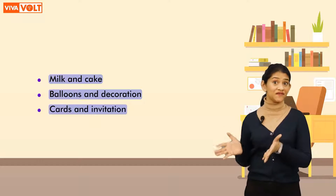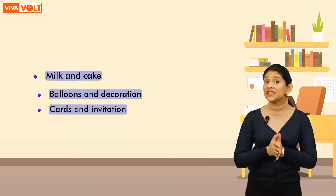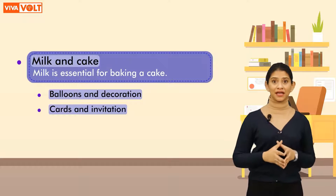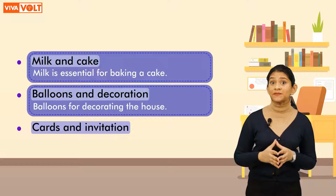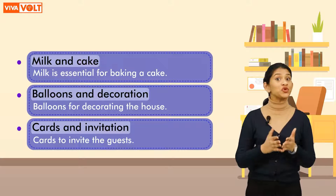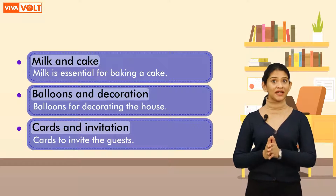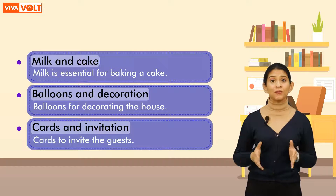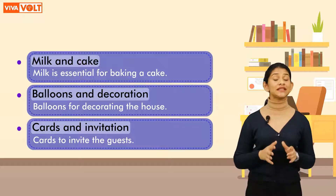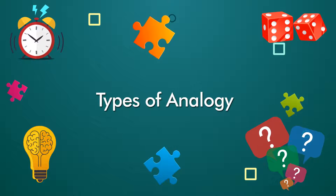Yes, there is! We can say that milk is essential for baking a cake, we definitely need balloons for decorating the house, and we do need cards to invite the guests. This is how we try to find similar relationships between the given things. Analogy is an interesting concept!